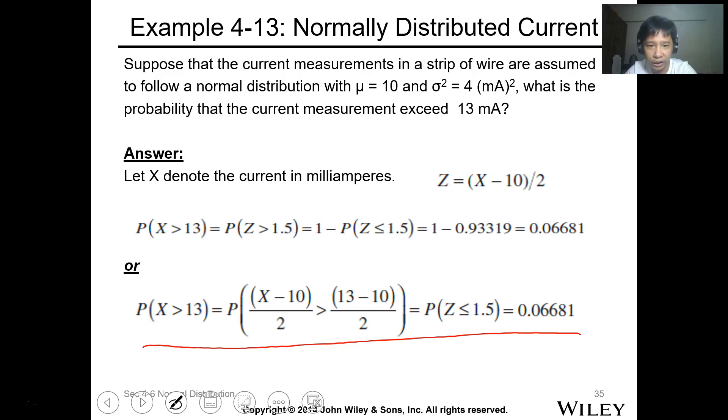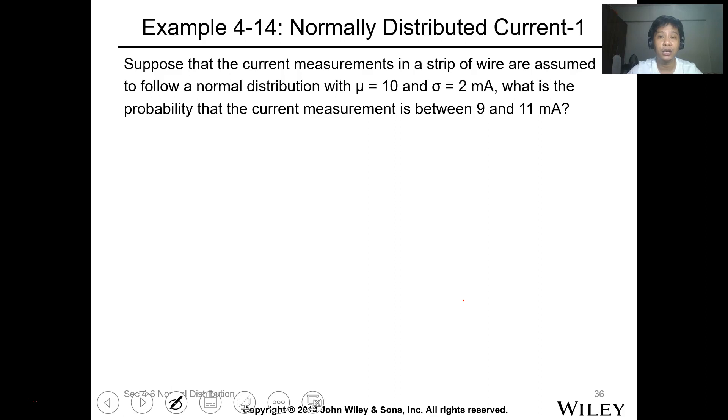Sorry, this is greater than that. Suppose that the current measurement in a strip of wire is assumed to follow a normal distribution with mu of 10 and a standard deviation of 2 milliampere. What is the probability that the current measurement is between 9 and 11?